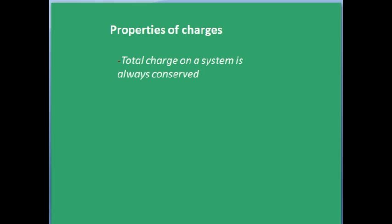Conservation of charges: the total charge on the system is always conserved. In all the above experiments, charges get transferred from here to there or get accumulated, but no charge is being created or destroyed. You can never create or destroy a charge, you can only transfer them from one body to another. This property is known as conservation of charge.